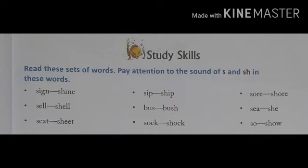Another one is S, O, R, E — Sore. Sore matlab ghau. And another one is S, H, O, R, E — Shore. Shore matlab kinara — jaise nadi ka kinara wagera ko bola jata hai shore. Another one is S, E, double L — Sell. Sell matlab, koi bhi cheez ko bechna — saaman bechna. Another one is S, H, E, double L — Shell. Shell matlab khal — jaise ki aap log tortoise ya crabs dekhe honge — unka shell hota hai, jo sakht hota hai.